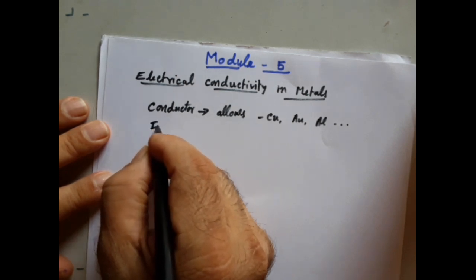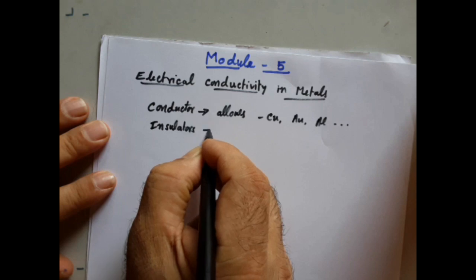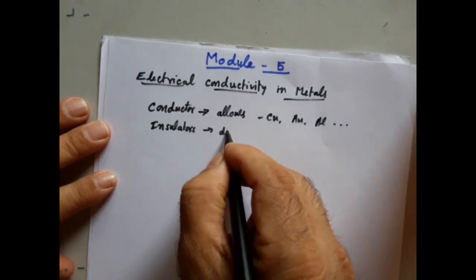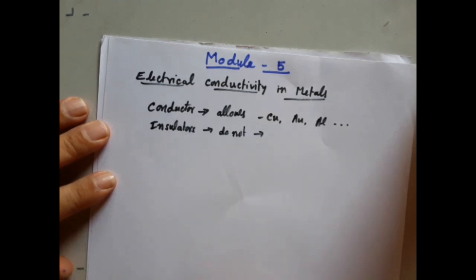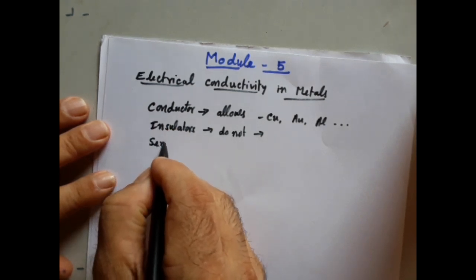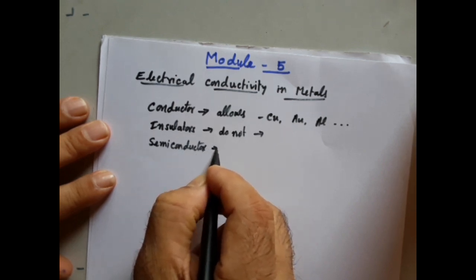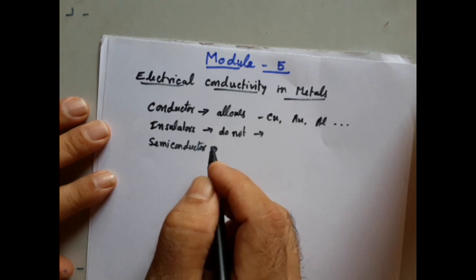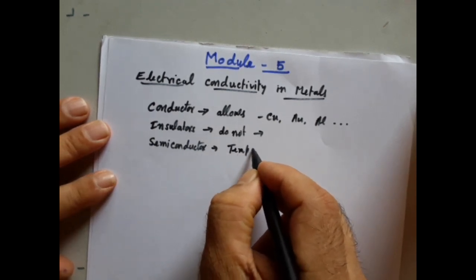The second kind of materials are what we call as Insulators. Insulators do not allow the charges to pass through, like wood, plastic, paper, etc. And in between the two, there is one more kind of material called a semiconductor. A semiconductor conducts charges based on temperature — it is a purely temperature-dependent material.